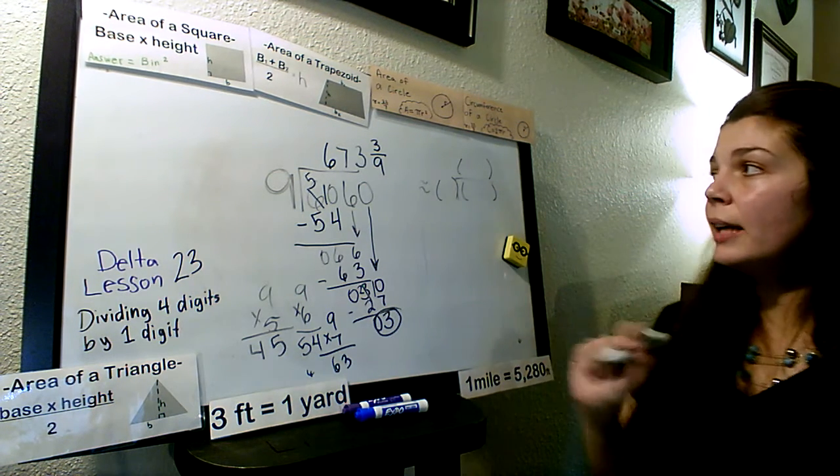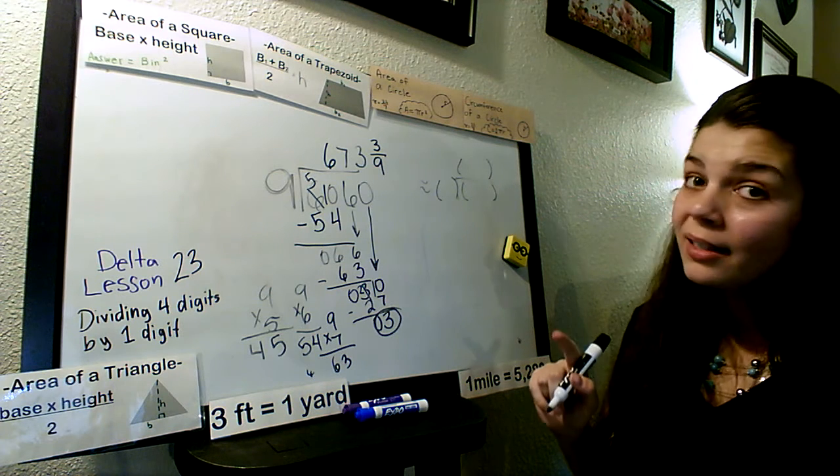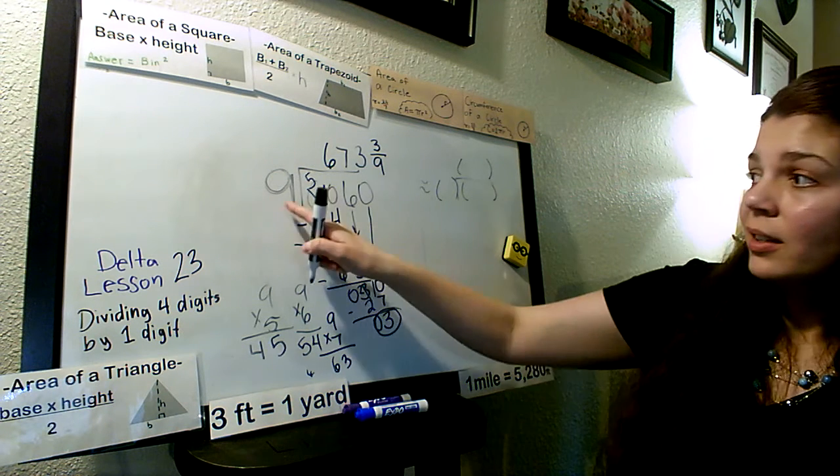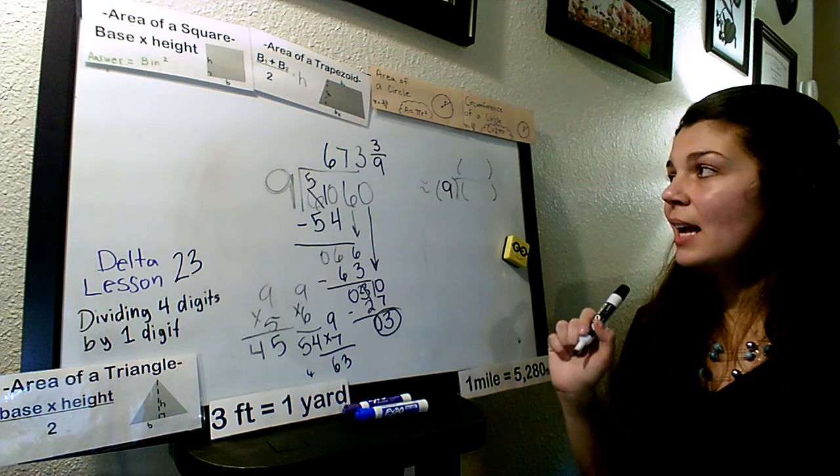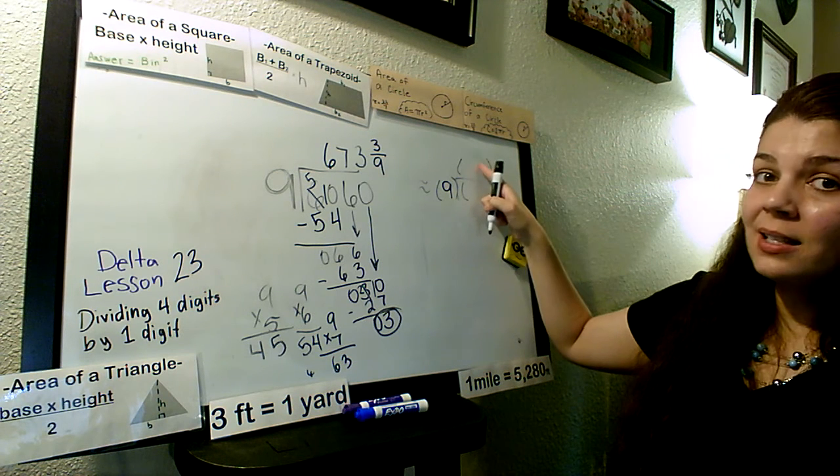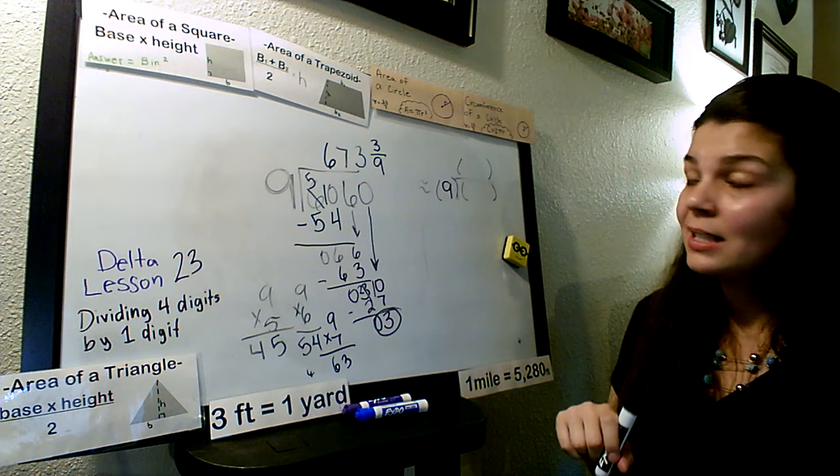3 ninths. Alright. So, if we look over here now, we're going to round. The only thing we don't round is our dividing number. Our 9 shoops over here? That stays. But our answer and our number that's been divided? That needs to be rounded.